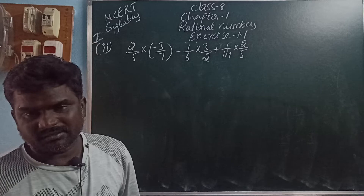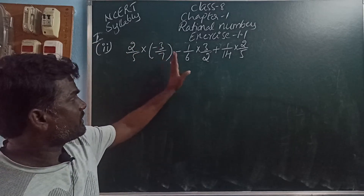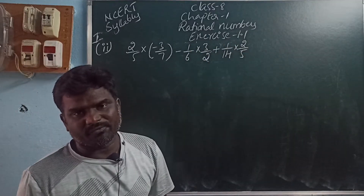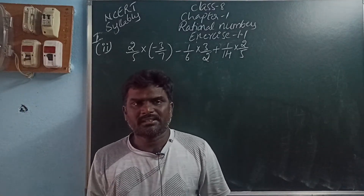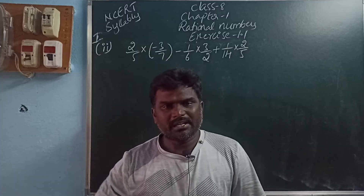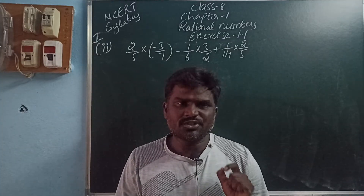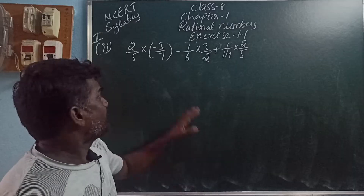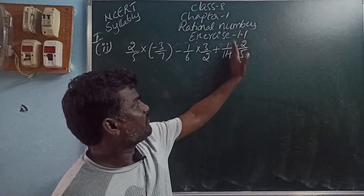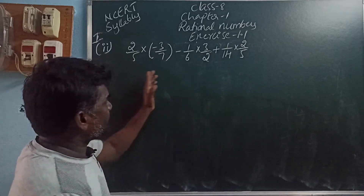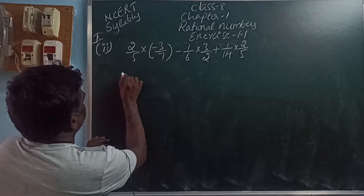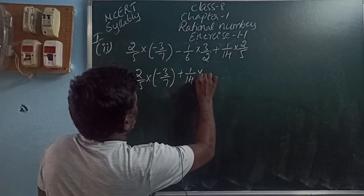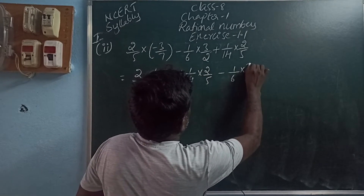In this problem there are three terms. The first term is 2 by 5 into minus 3 by 7. The second term is minus 1 by 6 into 3 by 2. The third term is 1 by 14 into 2 by 5. The common multiples are in the first term and last term: 2 by 5 and 1 by 14 into 2 by 5. So we can write the first and last terms on one side: 2 by 5 into minus 3 by 7 plus 1 by 14 into 2 by 5 minus 1 by 6 into 3 by 2.